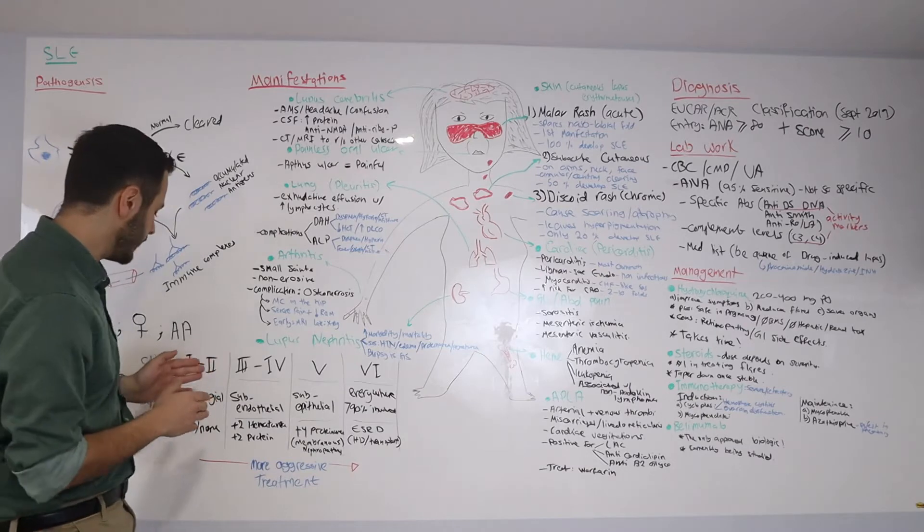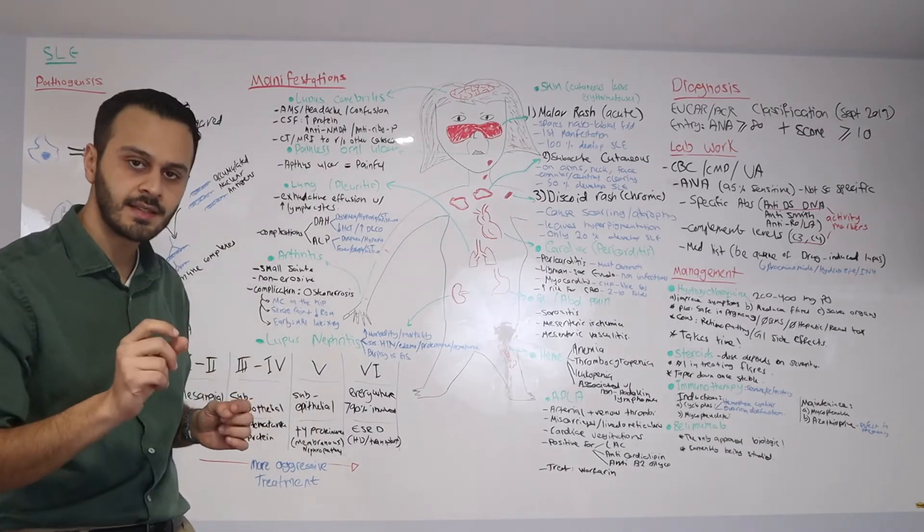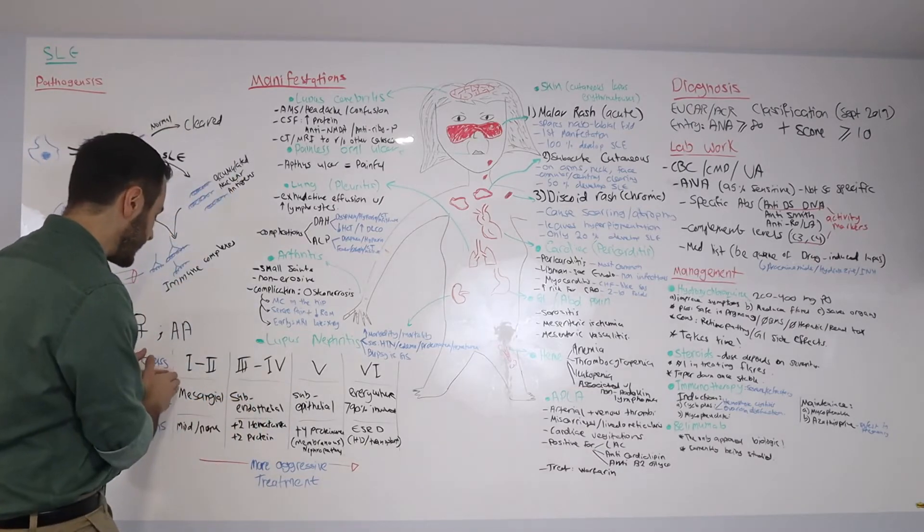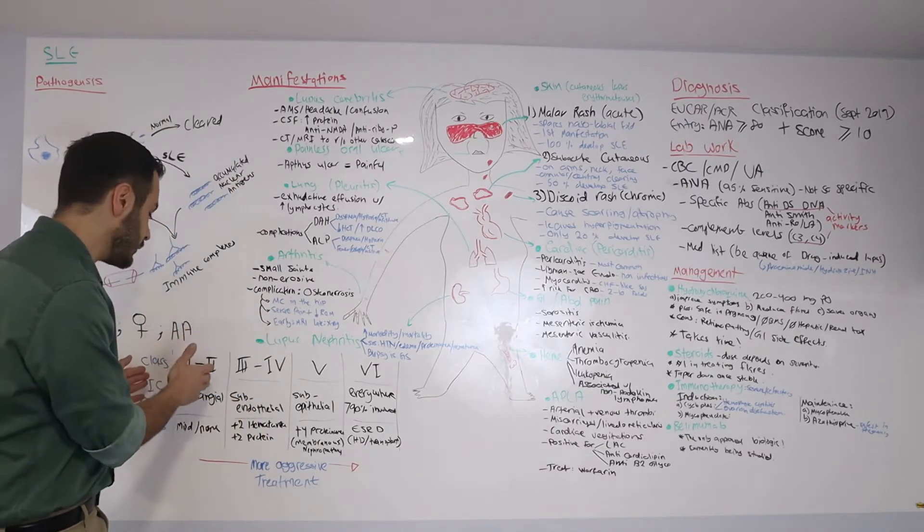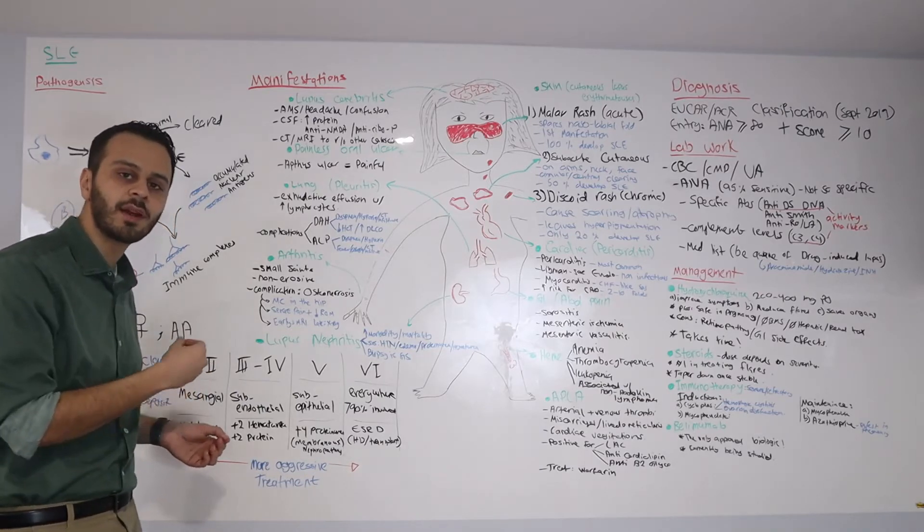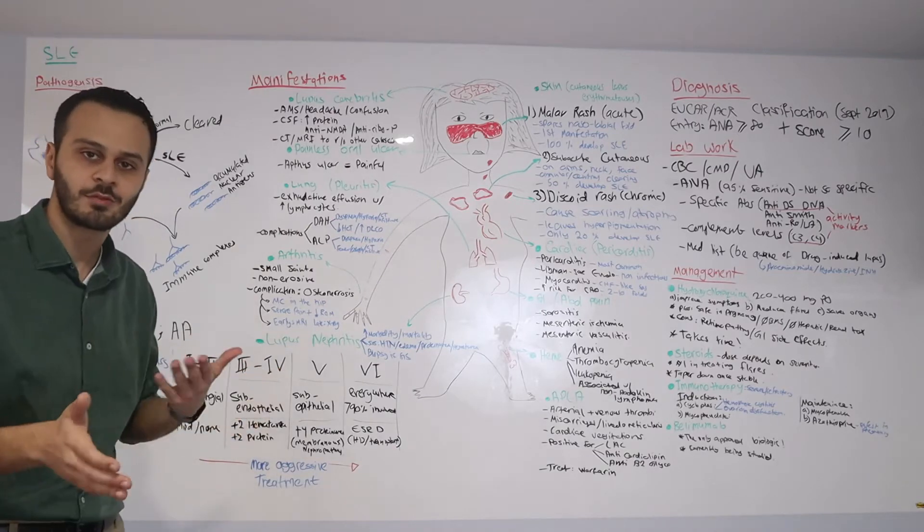Once these immune complexes start to deposit first in the mesangial area, that is classified as class 1 and class 2. With this class, it is very mild. You will barely see any proteinuria or hematuria, probably plus 1 if any.